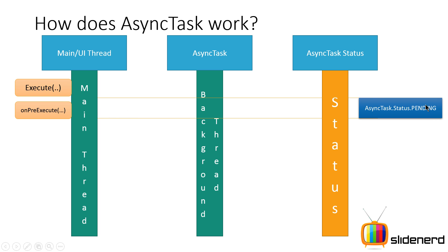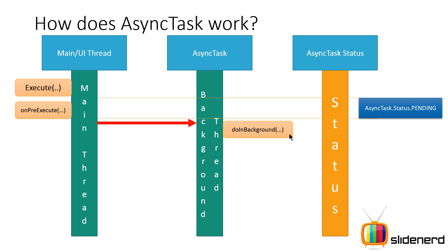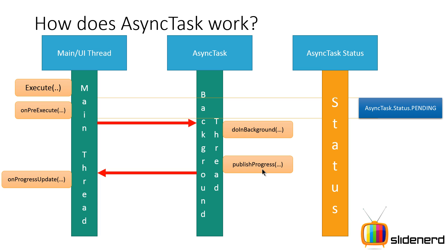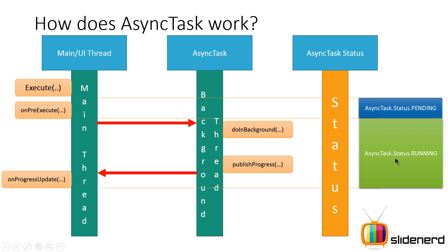Once onPreExecute completes, the AsyncTask is in a pending status — it hasn't started background work yet. Then doInBackground is called automatically, where you write code for your long-running task like downloading a file. From there, you can call publishProgress — for example, every 1024 bytes downloaded — and this automatically calls onProgressUpdate on the main thread, where you update the progress bar. During all this, the AsyncTask is in a running status.